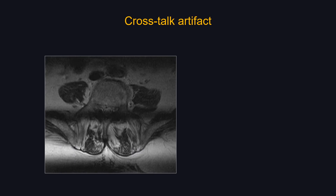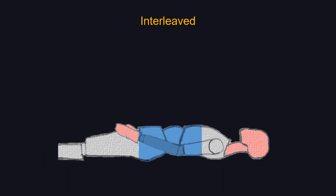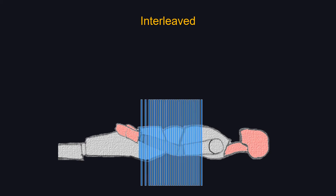You can see the crosstalk artifact on this image — the overlapping region produces a signal drop right in the middle of the spinal canal, potentially causing errors in interpretation. To avoid that, we perform acquisition in an interleaved fashion: acquire slices 1, 3, 5, 7 first, then come back with even numbers 2, 4, 6, 8.